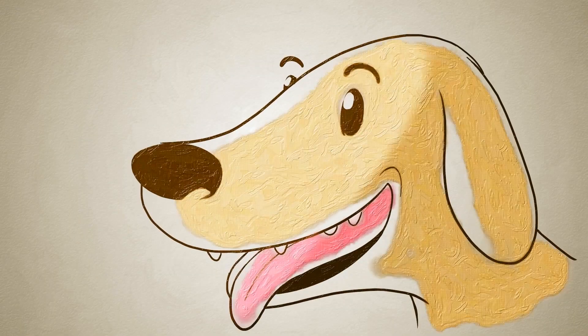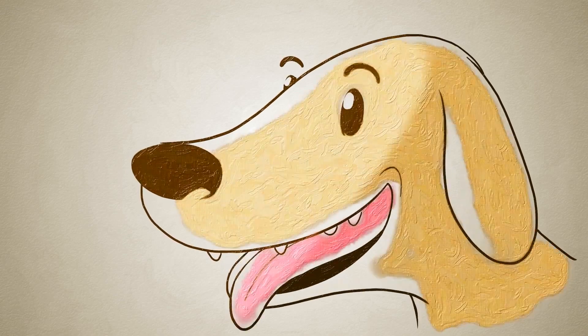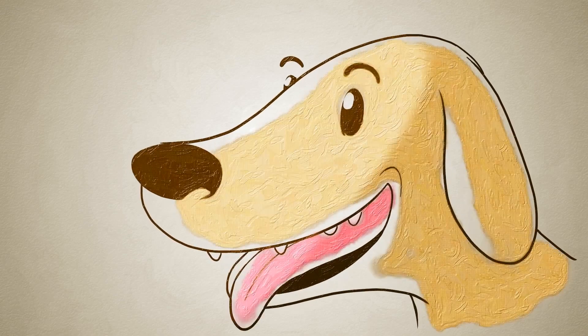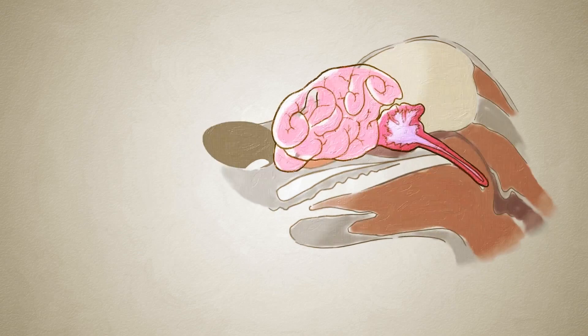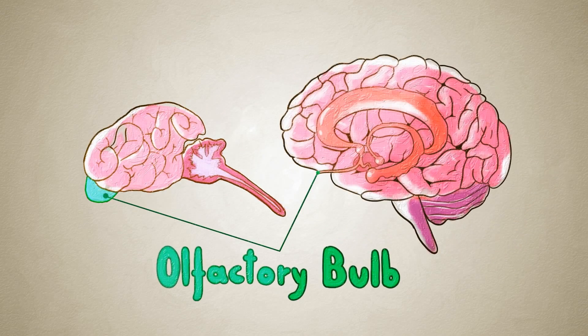But all that impressive nasal architecture wouldn't be much help without something to process the loads of information the nose scoops up. And it turns out that the olfactory system, dedicated to processing smells, takes up many times more relative brain area in dogs than in humans.